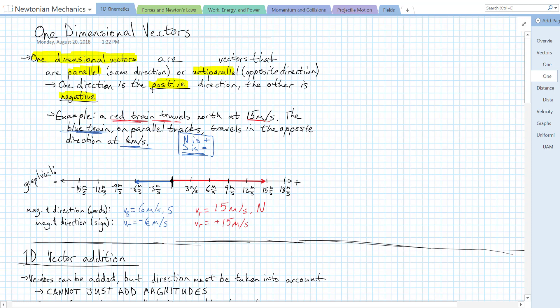And that's basically how we deal with one-dimensional vectors, at least at their most basic. Positive for one direction, negative for another direction. Bye!